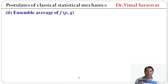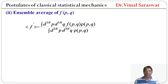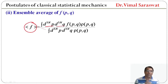The second method is the ensemble average of f. The ensemble average value of f is equal to the integration of d³ᴺp d³ᴺq times f times rho, divided by the integration of d³ᴺp d³ᴺq times rho, where both rho and f are functions of p and q.